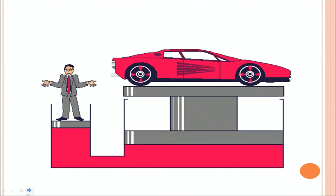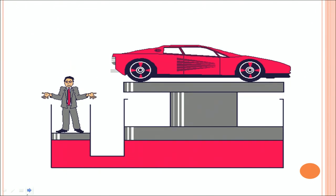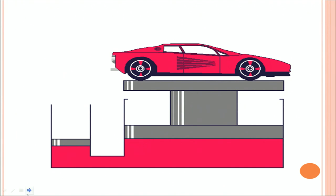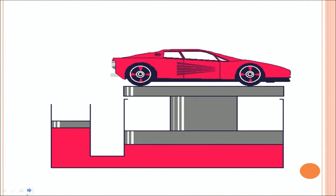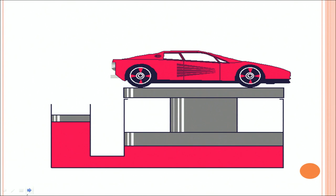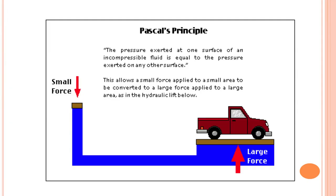Through this diagram you can see that on one side of the platform a man is standing and on the other side a car is placed, but both are connected by the fluid. Obviously the mass of the man is very low compared to that of the car. Then how is he able to lift a car with ease? Today we are going to learn this concept. A smaller force is exerted on one side and on the other side the area and the force are large — this is implied by Pascal's law.